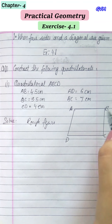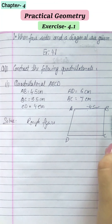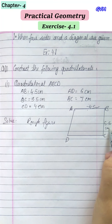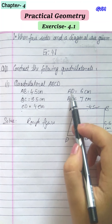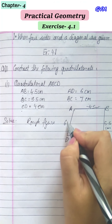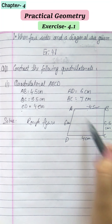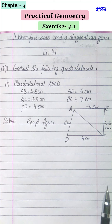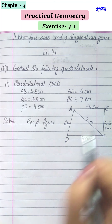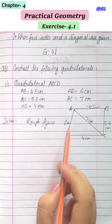In our rough diagram: AB = 4.5 cm, BC = 5.5 cm, CD = 4 cm, AD = 6 cm. AC = 7 cm, which means AC is our diagonal. Draw the diagonal AC, which is 7 cm.